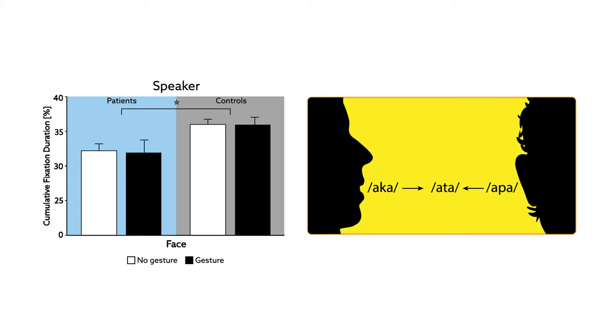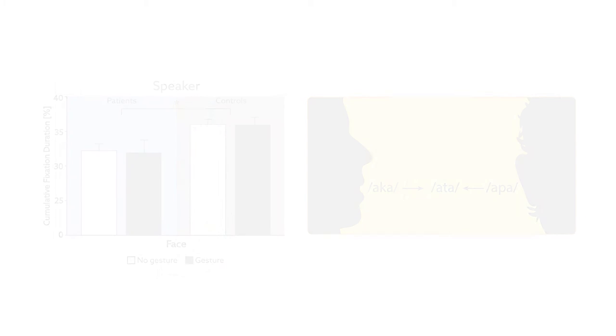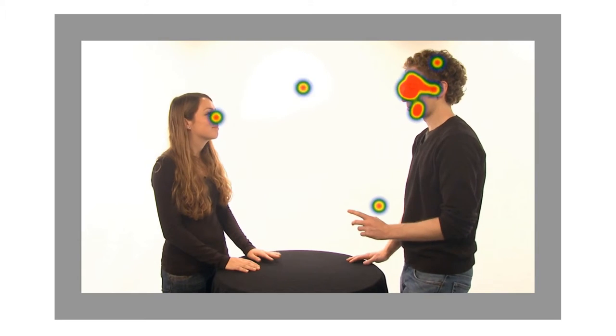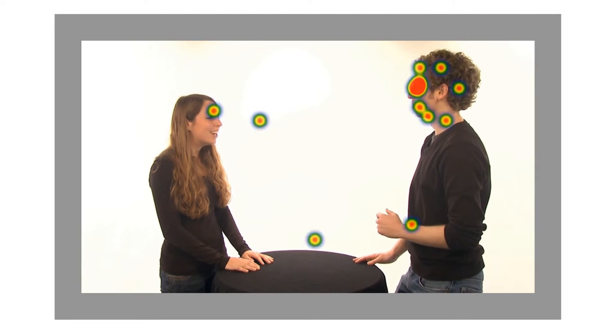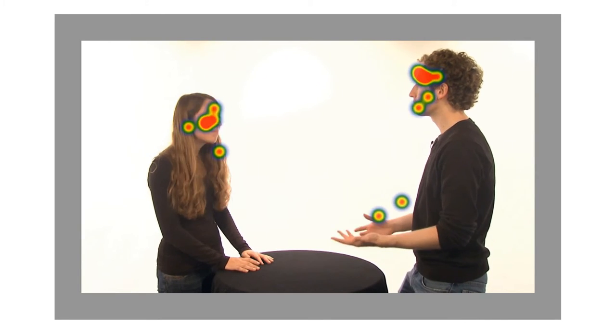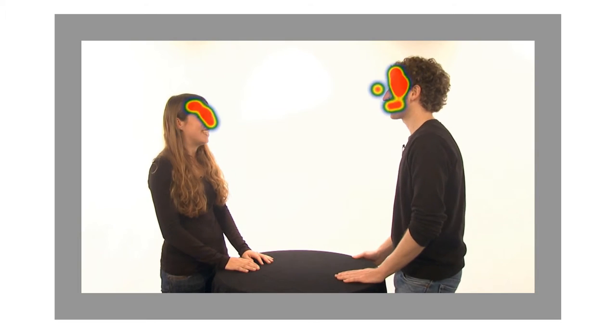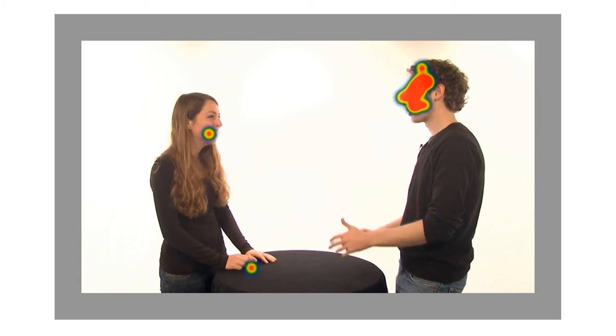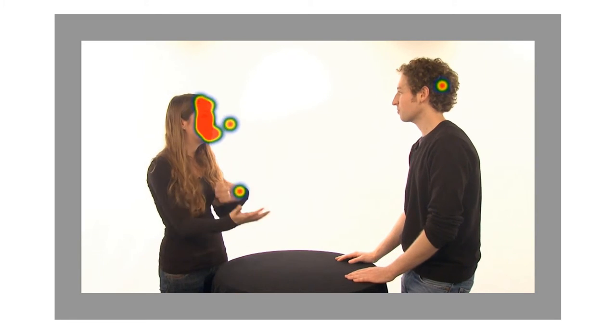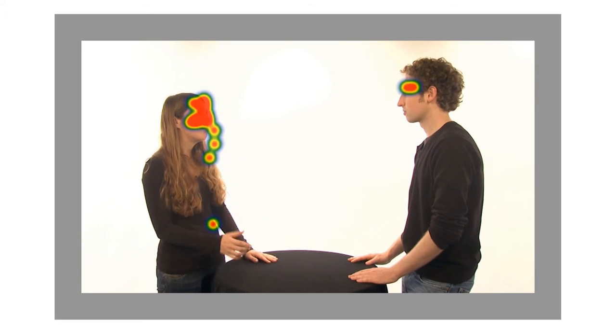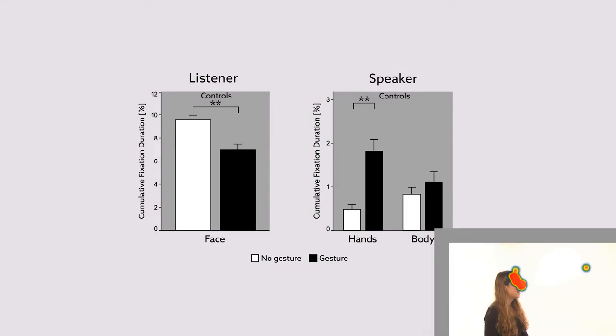The researchers first wanted to confirm that co-speech gestures influenced the direction of attention of healthy observers as they watched others conversing. They used a remote eye tracker from SMI to capture the eye movements of healthy subjects while they watched videos of two people conversing. By matching the eye movement data with events in the conversation, such as gestures and changes in speaker identity, the researchers showed that co-speech gestures do in fact draw attention toward the gesturing actor. Gestures cause the subject to look more at the speaker's hands and less at the listener's face.